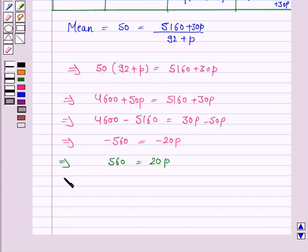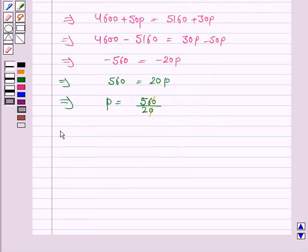So this implies P is equal to 560 upon 20 that is equal to 28. Hence value of P is 28.